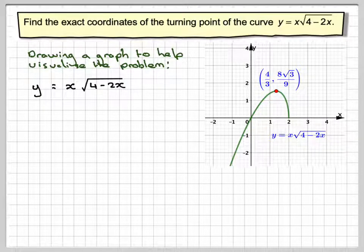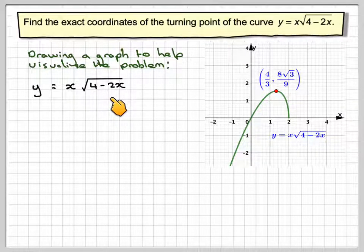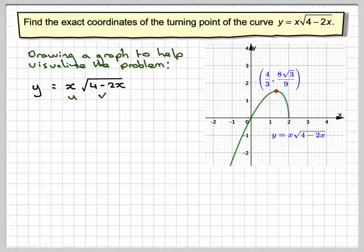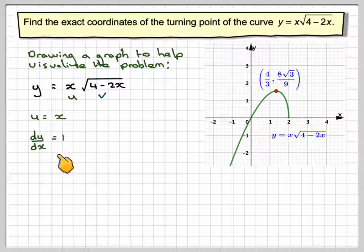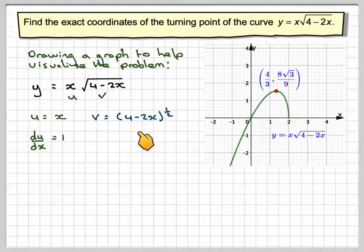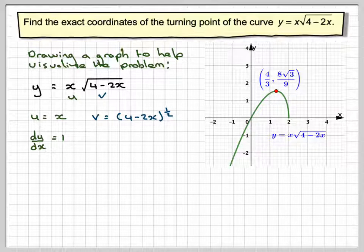So writing down the functions, we've got x times the square root of 4 minus 2x. That's type u times v. So u will be equal to x. du by dx will be equal to 1. v will be 4 minus 2x to the half.